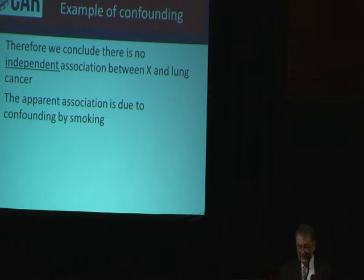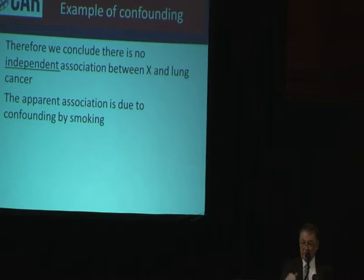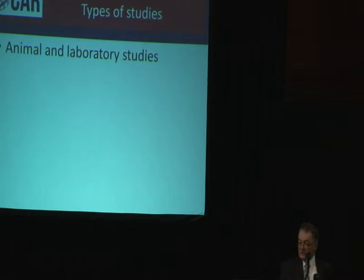Every other factor that could explain the association should be measured. But the other important thing is that you don't always know what those things are. In this case we know smoking is the cause of lung cancer and that was the confounding. But in environmental epidemiology there are often unknown causes of the things you're looking for, which you don't know about and don't measure, and they could be the cause of an apparent association. That's the art of interpreting epidemiological studies.